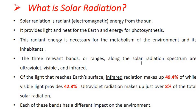The three relevant bands along the solar radiation spectrum are ultraviolet, visible light, and infrared. All three bands have different wavelengths and are differentiated from each other by their wavelength. Of the light that reaches Earth's surface, infrared radiation makes up 49.4%, visible light 42.3%, and ultraviolet radiation just over 8% of the total radiation.